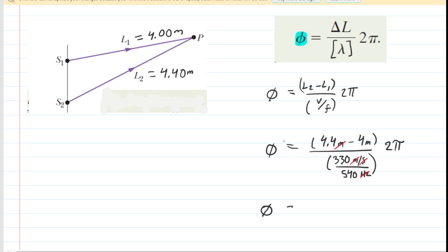So we can see that the phase difference is approximately 4.11 radians. That is the correct answer to the question.